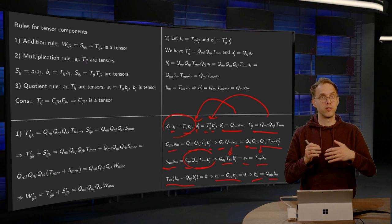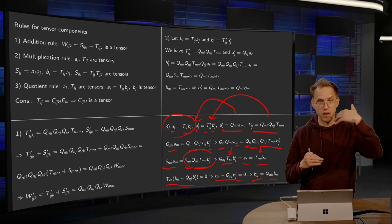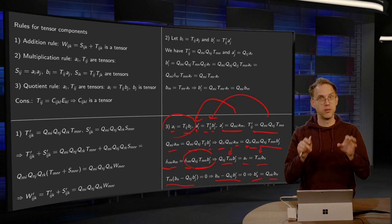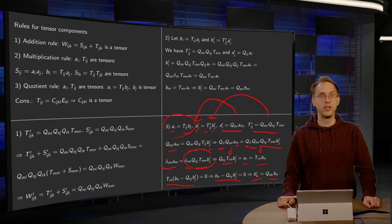And you can prove quotient rule like this for larger tensors in the same way. You use exactly the same trick. You just have a lot more Qmi's and so on in the equation.